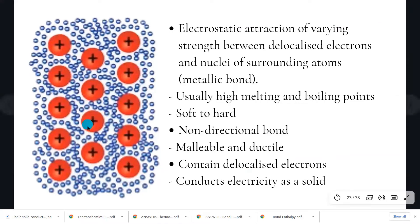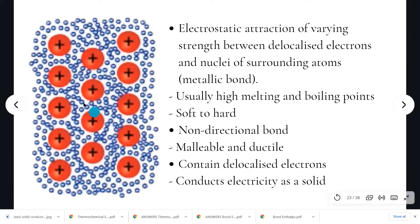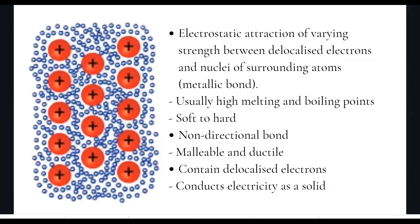Metallic bonds are what's called non-directional. This means the attraction between the nuclei and the surrounding delocalized electrons is not in any particular direction. The delocalized electrons are attracted to all of the surrounding atoms around them. So if we look at these electrons here, they would be attracted to this nuclei, this nuclei, this nuclei, this nuclei, and so on.